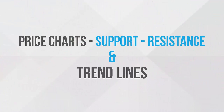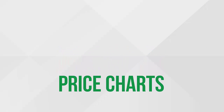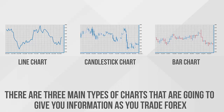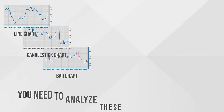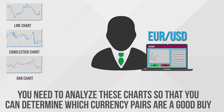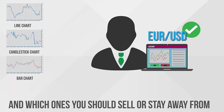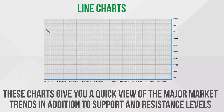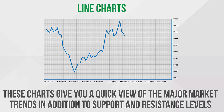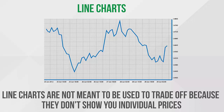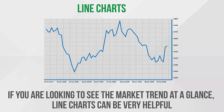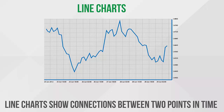Price charts: there are three main types of charts that will give you information as you trade Forex. You need to analyze these charts so you can determine which currency pairs are a good buy and which ones you should sell or stay away from. Line charts give you a quick view of the major market trends in addition to support and resistance levels. Line charts are not meant to be used to trade off because they don't show you individual prices. However, if you are looking to see the market trend at a glance, line charts can be very helpful.